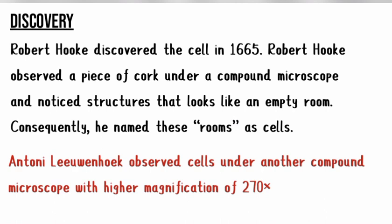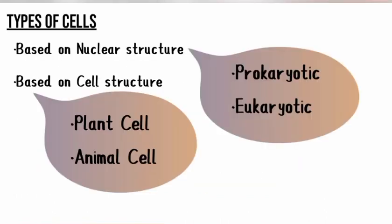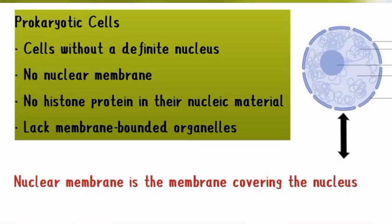When it comes to types of cells, we have two bases of classification. You can classify cells based on their nuclear structure, and you can also classify cells based on their physical cell structure. Based on nuclear structure, we have prokaryotic and eukaryotic cells. Based on physical structure, we have plant cells and animal cells. We are going to pick these four divisions one after the other, starting from prokaryotic cells.